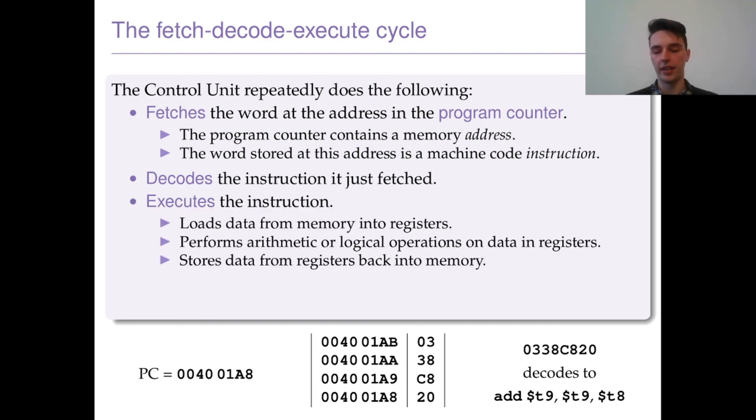The word stored at this address, which is 0338C820, is the next instruction. So it decodes that. As you can see, it takes the hex number and decodes it to add some values together. Once it's done that, it then executes the instruction. In this case, it would need to add the values at $t9 to the values at $t8, and then it would store them at $t9. Once it's executed the instruction by performing the calculation and storing the values back into memory, we then need to increment the program counter.